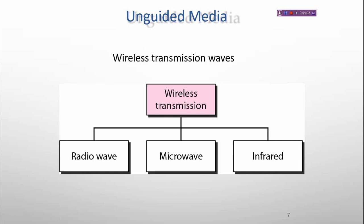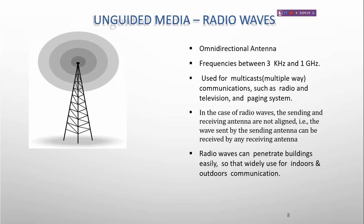The unguided media are of three types: radio waves, microwaves, and infrared. First is radio wave. It uses an omnidirectional antenna, with a frequency between 3 kHz to 1 GHz. It is used for multicast communication such as radio, television, and tagging systems. The sending and receiving antennas do not need to be aligned — any receiving antenna can receive the waves sent by the sending antenna.